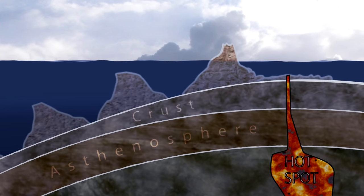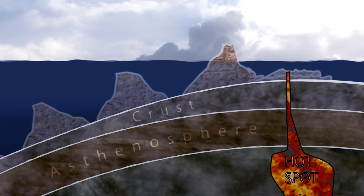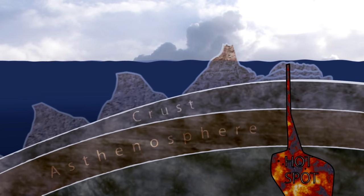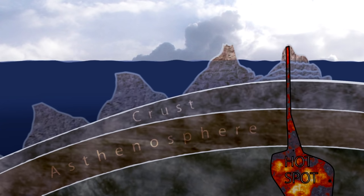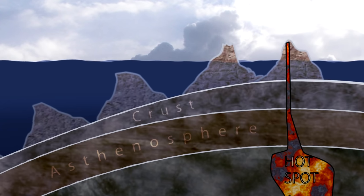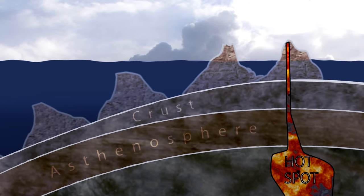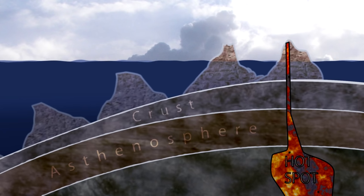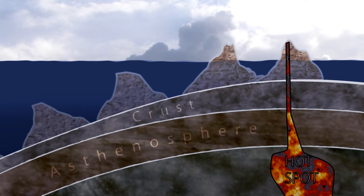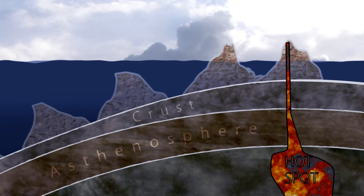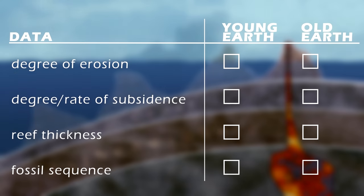According to the old Earth model, this process has been going on for a very long time, maybe sometimes slower or faster, but spread over many millions of years. According to the flood geology or young Earth model, these islands and seamounts all formed in just a few years, maybe in as little as a single year after the start of Noah's flood. These different models lead to very different expectations in terms of the degree of erosion from one island to the next, the degree of subsidence, reef thickness, and fossils, and what should be expected when rocks from each island are radiometrically dated.